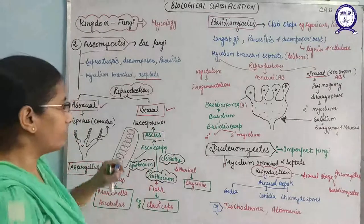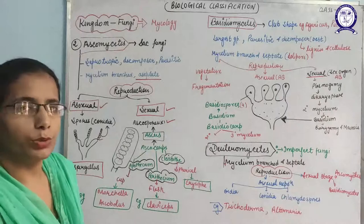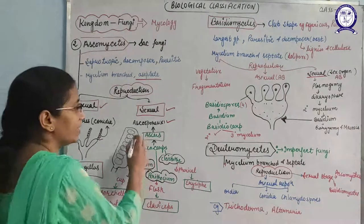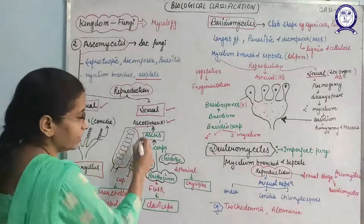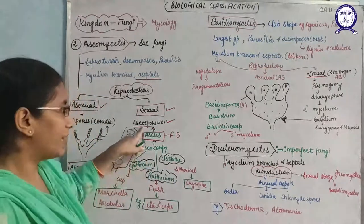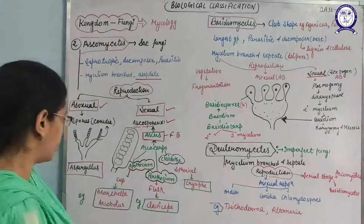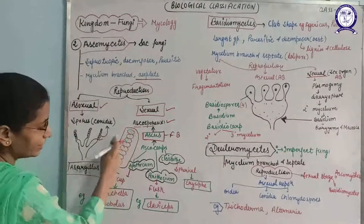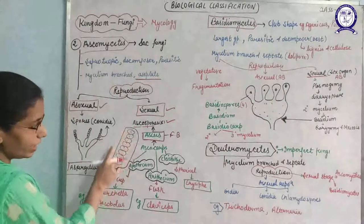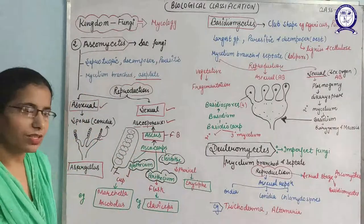Sexual reproduction in Ascomycetes takes place with the help of ascospores. Keep in mind that in Ascomycetes, ascospores are produced only in groups of eight — clusters of eight ascospores. These ascospores are produced inside the fruiting body known as the ascus. The ascus is produced on the ascocarp. So the hierarchy is: ascocarp → ascus → ascospores.